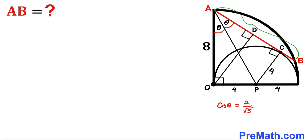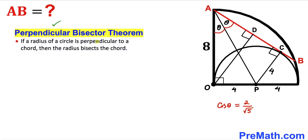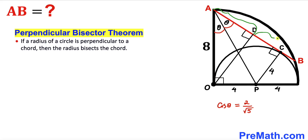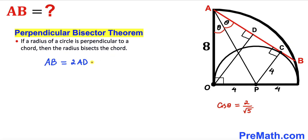I have dropped a perpendicular OD onto chord AB. Recalling the perpendicular bisector theorem: if a radius is perpendicular to a chord, the radius bisects the chord. Since AB is the chord and OD is part of the radius of the quarter circle, segment AD equals segment BD. Therefore the chord AB = 2 × AD. I'll label this as equation 1.